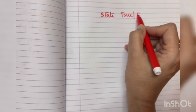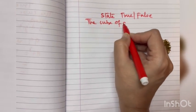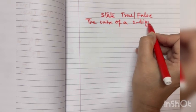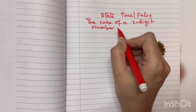The cube of a two-digit number may be a three-digit number. The cube of a two-digit number may be a three-digit number. Yes. Okay.